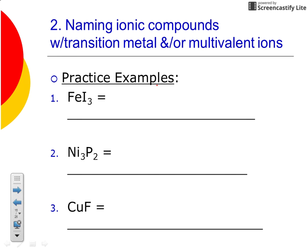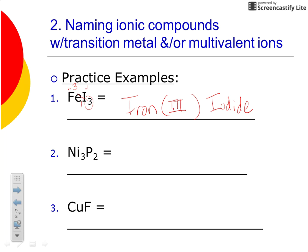Let's practice a couple of these. You name your first element the same — this is iron. But since iron is multivalent, we're going to have to give a Roman numeral to indicate its charge. For the second element, iodine changes to iodide, I-O-D-I-D-E. Now we uncrisscross the formula to figure out iron's charge: iodine always crosses a negative one down, so iron must have crossed a positive three down. This compound is iron(III) iodide.